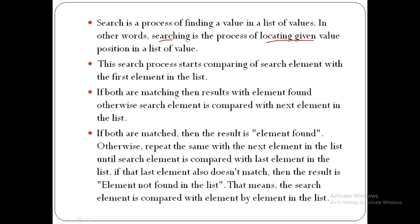We will now discuss linear search. Linear means sequential manner — linear search means we are going to search for an element in a sequential order, one element after another. This search process starts by comparing the search element with the first element in the list.